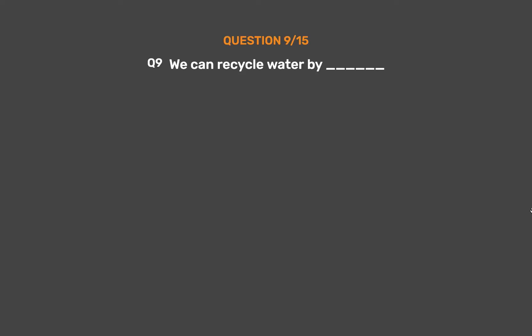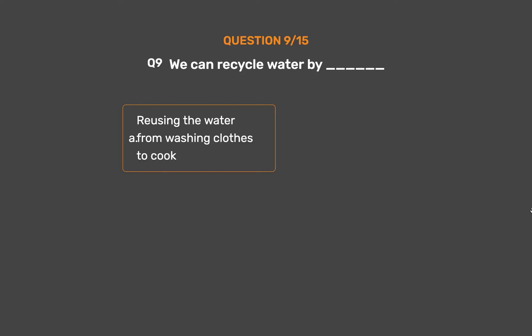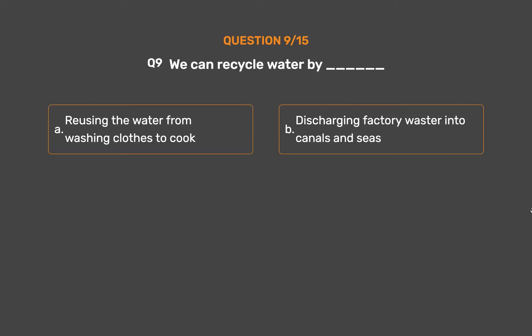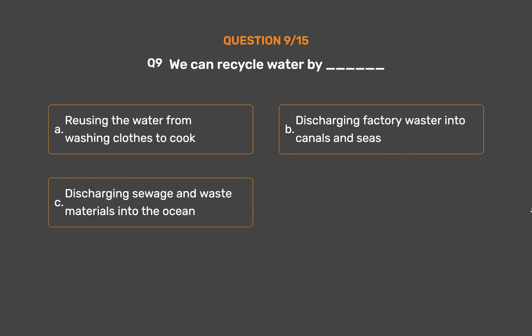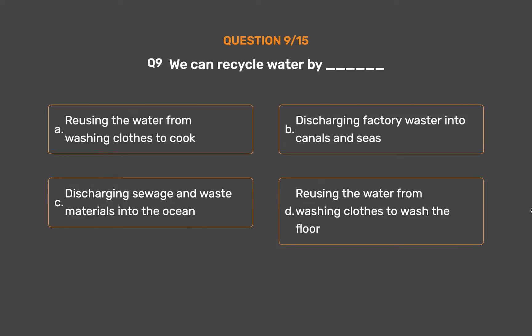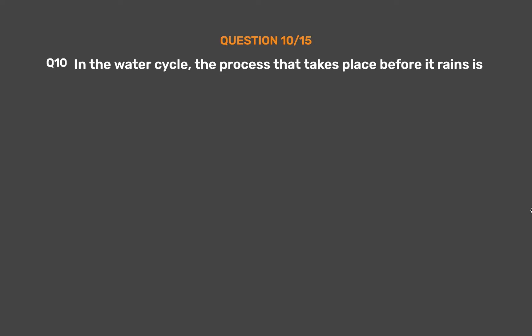Question number nine: We can recycle water by — option A: reusing the water from washing clothes to cook, option B: discharging factory waste into canals and seas, option C: discharging sewage and waste materials into the ocean, option D: reusing the water from washing clothes to wash the floor. The correct answer is option D: reusing the water from washing clothes to wash the floor.